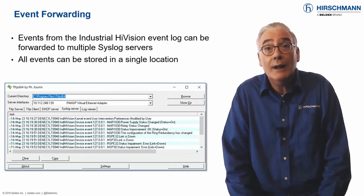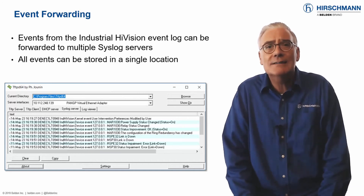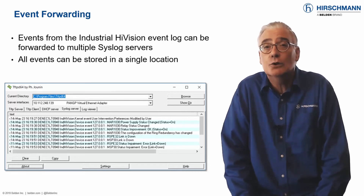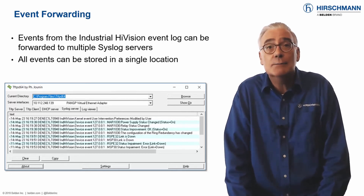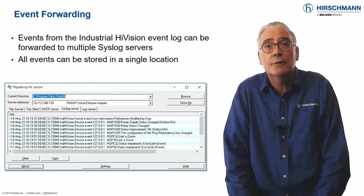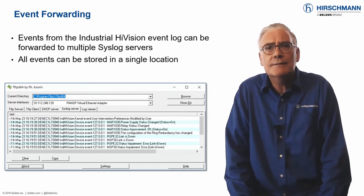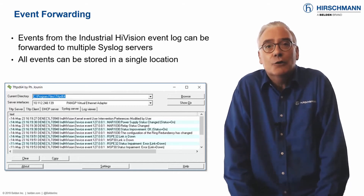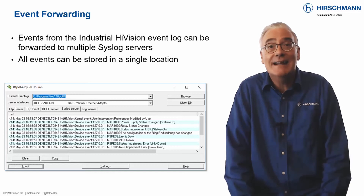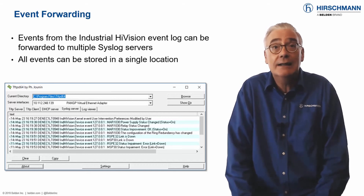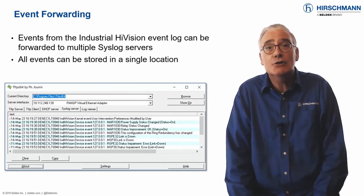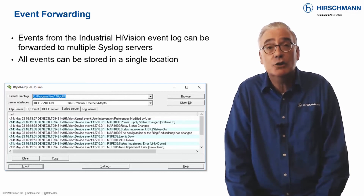Industrial HiVision provides two powerful options to forward events to one or more central syslog servers. First, all internal events can be forwarded — events relevant to Industrial HiVision itself, such as user logins. Second, events about network devices can be forwarded. This is useful if your network devices do not support syslog, or if you do not want your devices to send their own syslog messages outside the local network. Storing all your messages centrally allows you to take advantage of modern techniques such as event correlation.